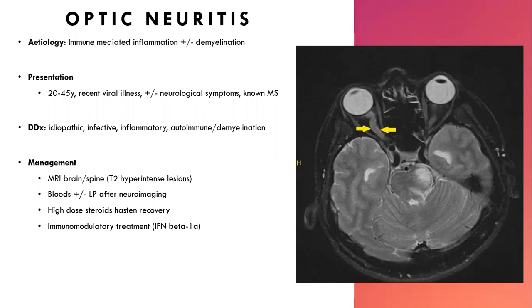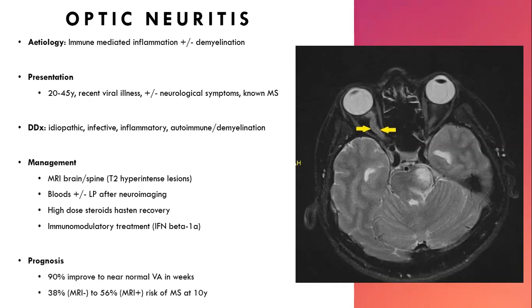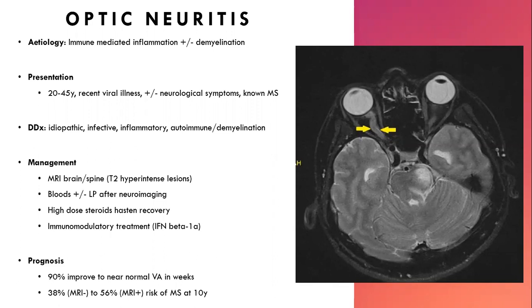These patients are co-managed between ophthalmology and neurology. If it's known MS, interferon treatment reduces progression. If autoimmune, possibly rheumatology. Most will return to near-normal visual acuity. If the MRI is positive for a hyperintense lesion, they have over 50% risk of developing MS over a 10-year period, so serial MRI imaging is needed. As a GP or ED doctor, you can arrange an MRI after discussing with an ophthalmologist — or refer to a neurologist or ophthalmologist if imaging isn't immediately available.